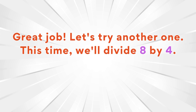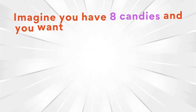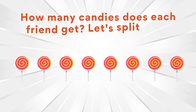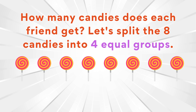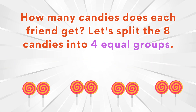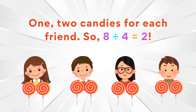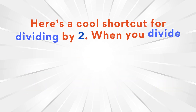Great job! Let's try another one. This time we'll divide eight by four. Imagine you have eight candies and you want to share them equally among four friends. How many candies does each friend get? Let's split the eight candies into four equal groups — one, two candies for each friend. So eight divided by four equals two.